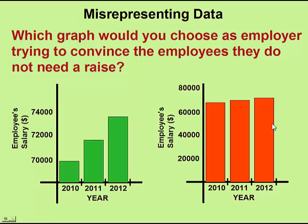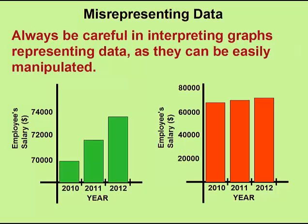So the difference in the bar graph does not appear as much as it does on the green bar graph. In what way would it be an advantage? If you were an employer, for example, trying to show that over the last three years your employees have had significant increases, you would pick the green bar graph. If you were a union representative, you would present the red bar graph, trying to indicate that the employees have not had a very great increase the last three years. This is an example of how data can be easily manipulated by simply adjusting the axis. Always be careful in the ways that data is presented — it can be manipulated very simply and used to represent a very biased point of view.